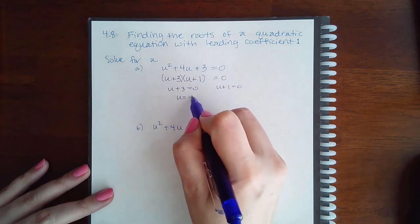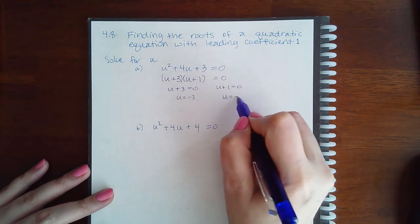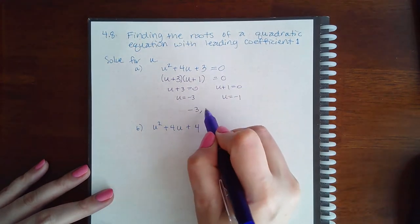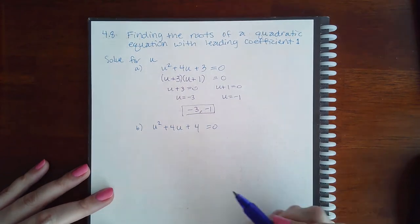Then if I set each of these factors equal to 0, I would subtract 3 on both sides and subtract 1 on both sides. So my two solutions would be negative 3 and negative 1.